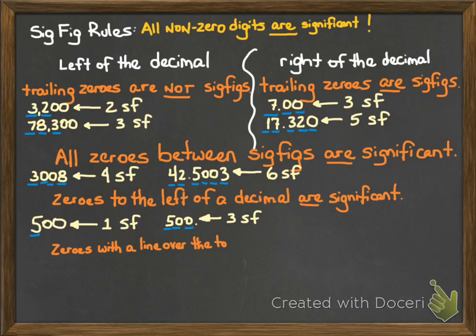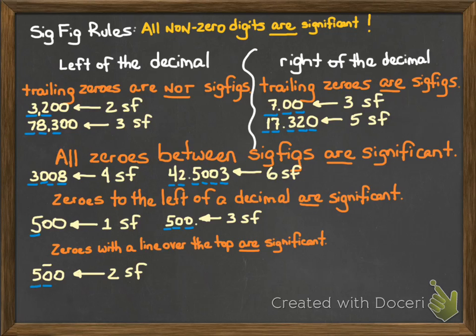The last rule on this slide: zeros with a line over the top are significant. This is useful when you're in a jam. How do you make a number like 500 have two sig figs? We've already established it has one sig fig. But if we put a line over that middle zero, we would have two sig figs — the leading five and then the following zero with the line over it are significant. If we move that line to the following zero at the end, all three would be significant because we'd be bracketing the middle zero.